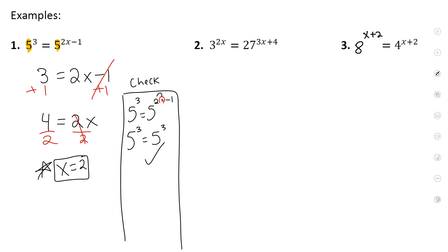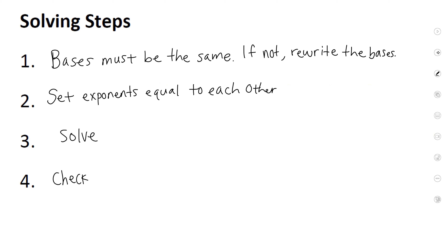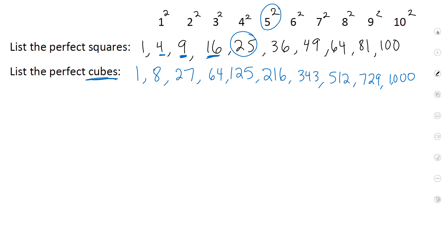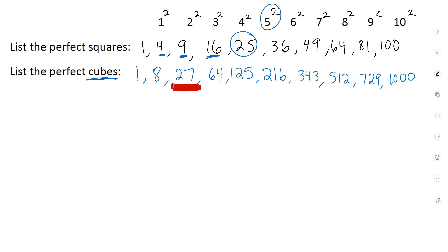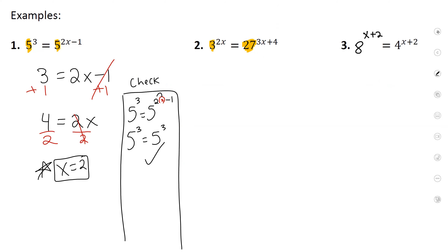Number two: my bases are not the same — one is three, the other is 27. They don't match, so we need step one: rewrite the bases. Looking at our list, 27 is three cubed. So instead of writing 27, we write 3 to the third power. Now we go back to the problem.